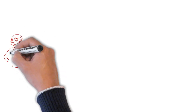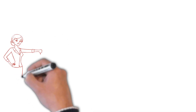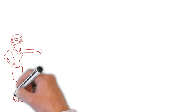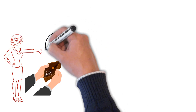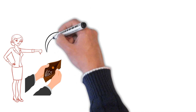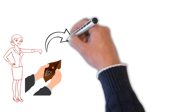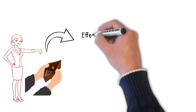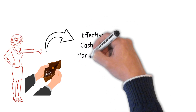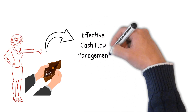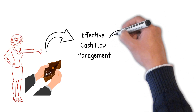One of the most common reasons companies go out of business is because they simply run out of cash. Construction businesses often must front much of their project's costs before sending out the first invoice, so they can be especially vulnerable to this if cash flow is not managed in a smart way. That's why effective cash flow management is so important for construction companies.